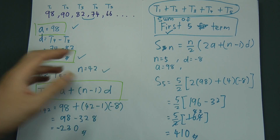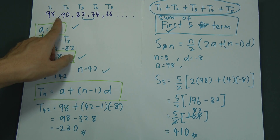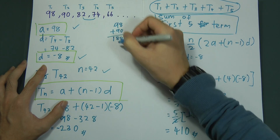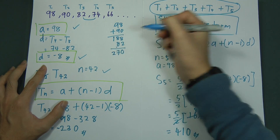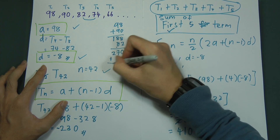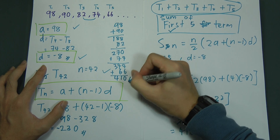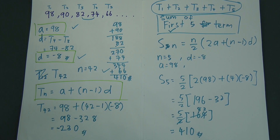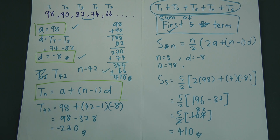We can verify: 98 + 90 = 188, plus 82 = 270, plus 74 = 344, plus 66 = 410. You get 410 as well. That's all for Part 1. To summarize: Sn means the sum of the first n terms, and Tn means the value of the nth term — whichever term you want to find. Thanks for watching Part 1.